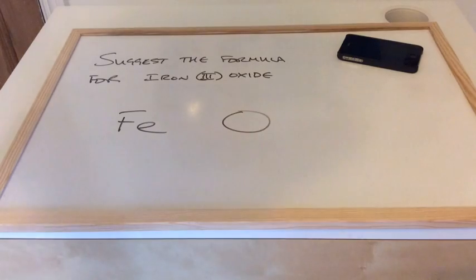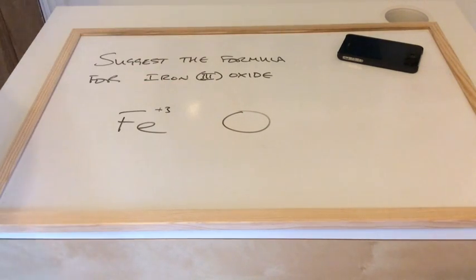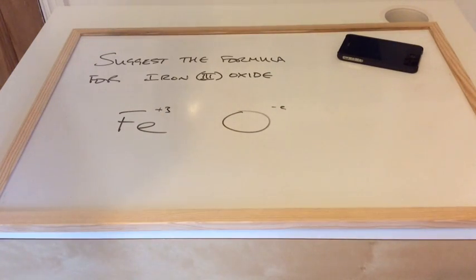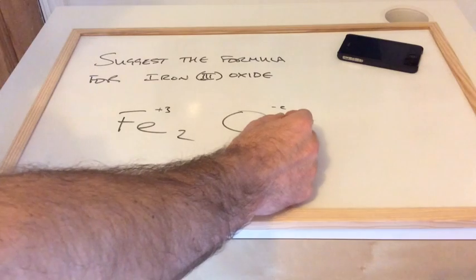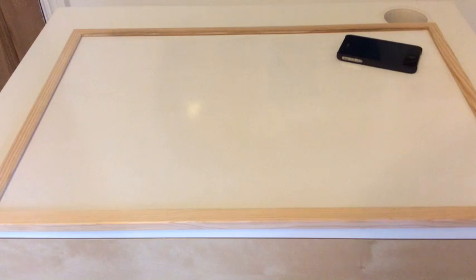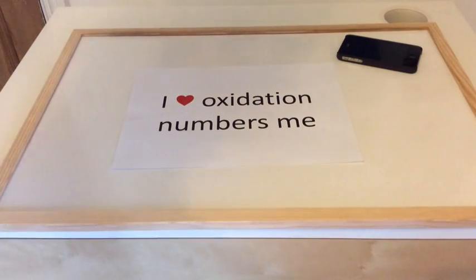For iron(III) oxide: the Roman numeral III means iron is plus 3, and oxygen is minus 2. Plus 3 and minus 2 don't cancel with just one of each, so we need to find the lowest common multiple, which is 6. Multiply iron by 2 to give plus 6, and multiply oxygen by 3 to give minus 6 — they cancel. The formula of iron(III) oxide is Fe2O3. Hopefully that was helpful — don't forget the rules, you need to know those off by heart.